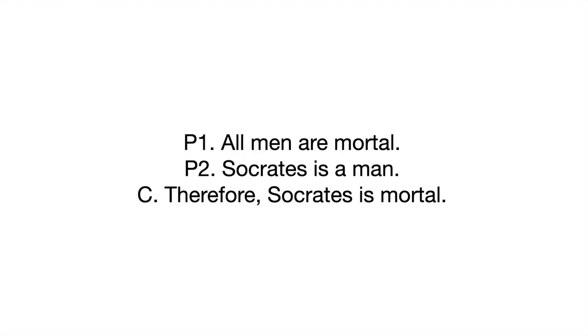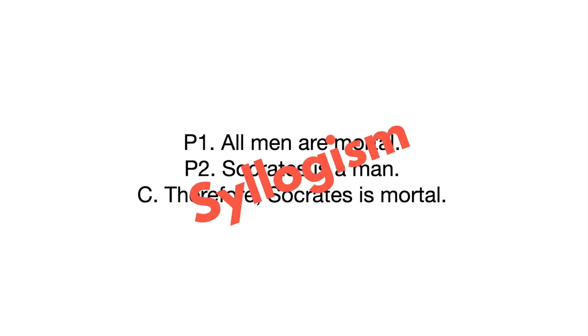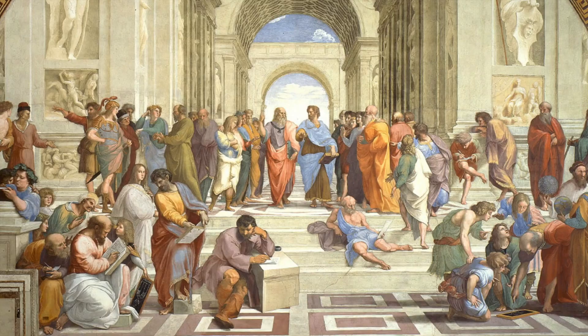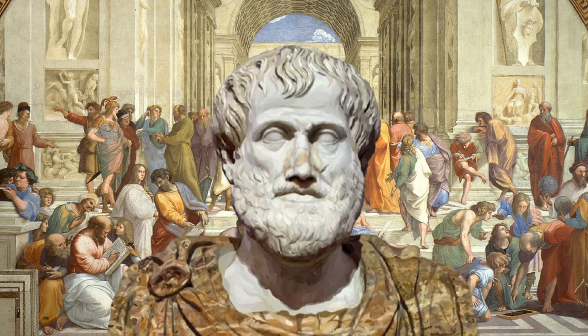An argument that has only two premises and one conclusion is called a syllogism, and they're used a lot in classical logic, which mainly traces its roots back to ancient Greece and, largely, Aristotle.